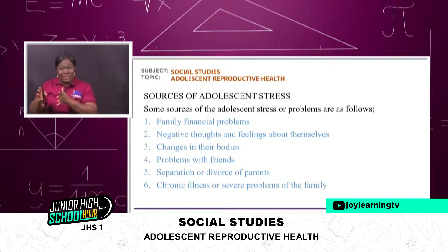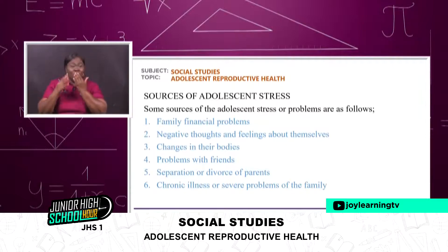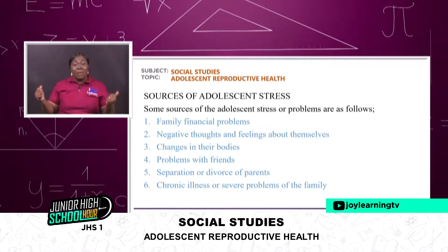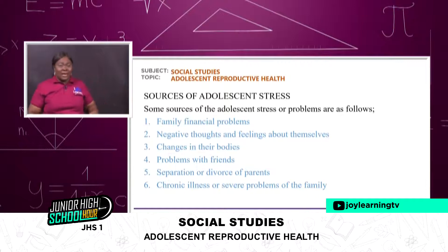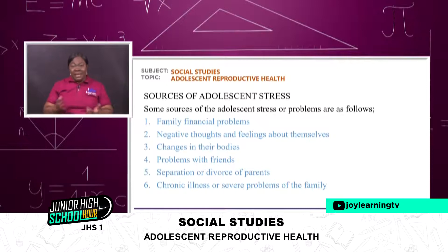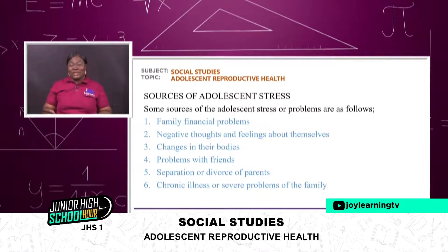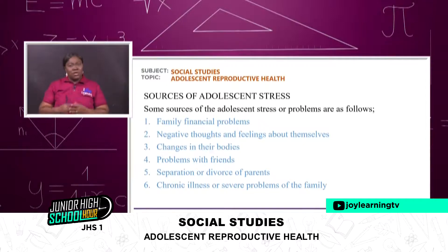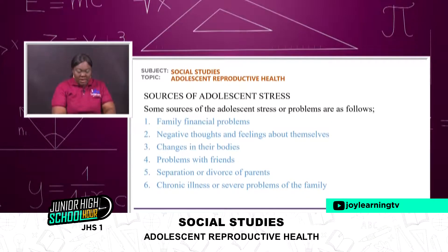It's a gradual process and a gradual transition — it will get away with time. You shouldn't be so worried about having pimples on your face or thick lips — it's adolescence, it will wither away with time. Changes in their body — some adolescents when they are going through adolescence become fat, and they get worried. Problems with friends in the classroom are also sources of stress. Separation or divorce of parents also stresses adolescents. Chronic illness or severe problems in the family also stress the adolescent.